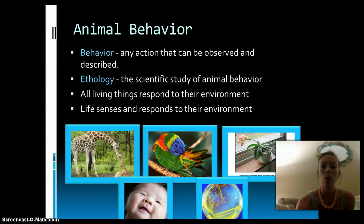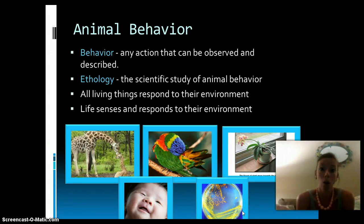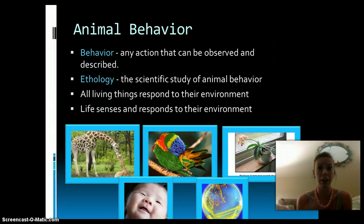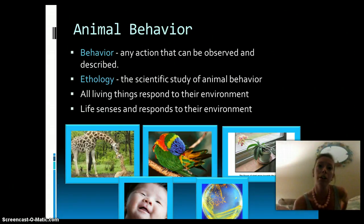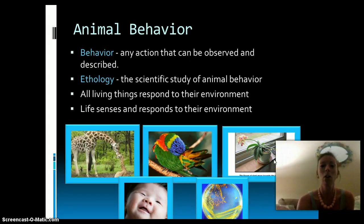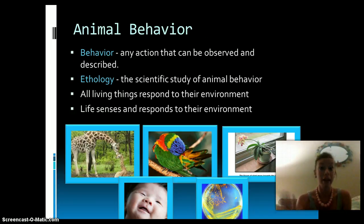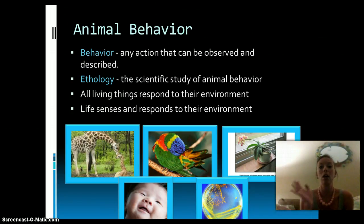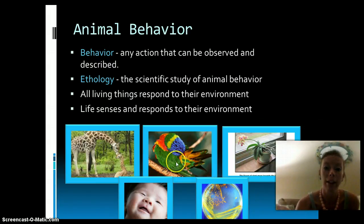A few examples: bacteria. If you plate or culture bacteria and the conditions are favorable, they are going to grow and multiply. If there are poor conditions, they are going to die off. Plants, which are living things, are also going to respond to their environment. One example: for sunlight, they will grow in the direction of the sunlight. You can actually see a sunflower moving in the direction of the sunlight.